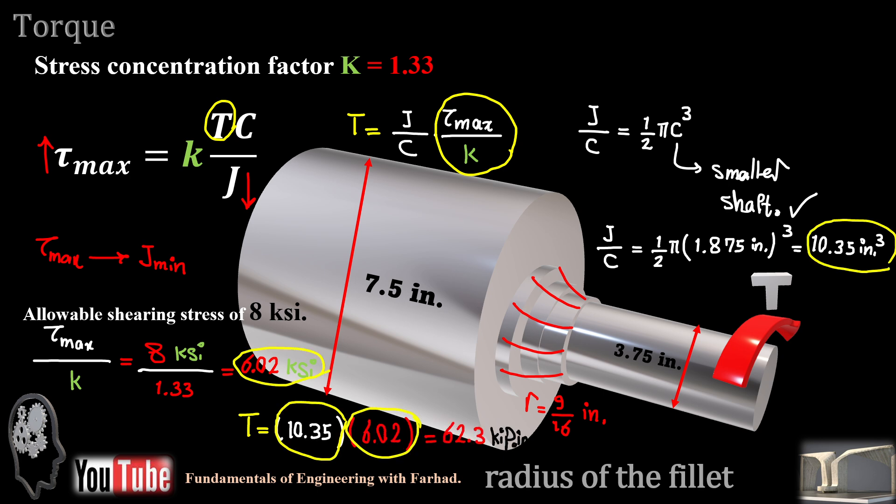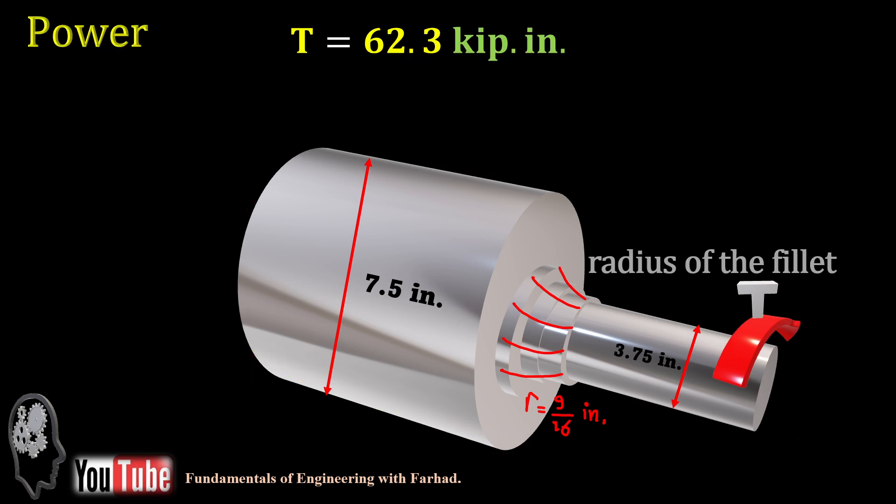Then torsional torque is simply this part, J over c, which is 10.35 times tau maximum over K, which is this part. And it gives us 62.3 kilopound inches in terms of torsional torque, which applies at a smaller end.